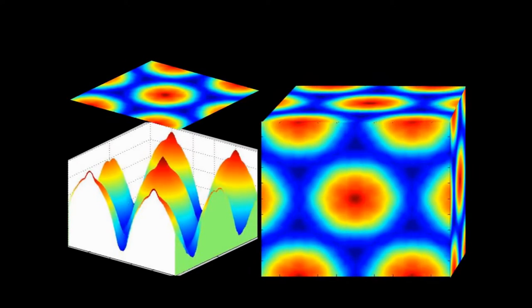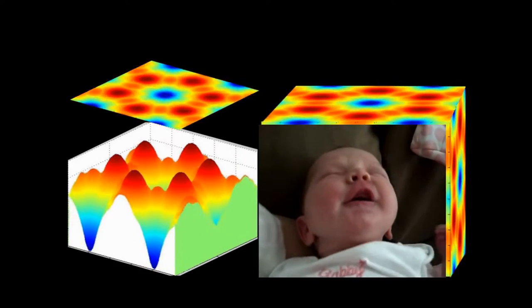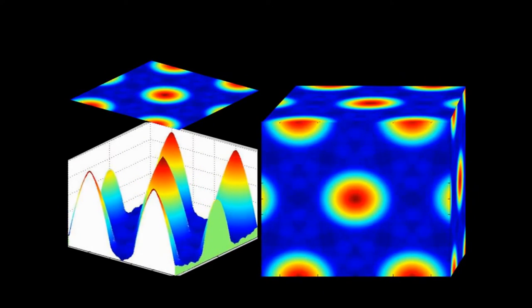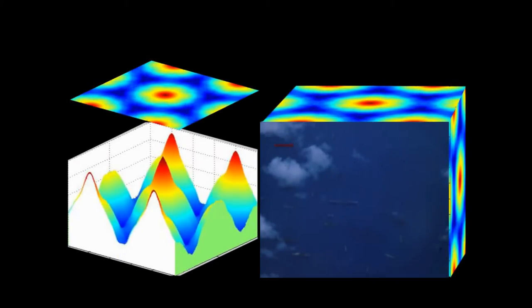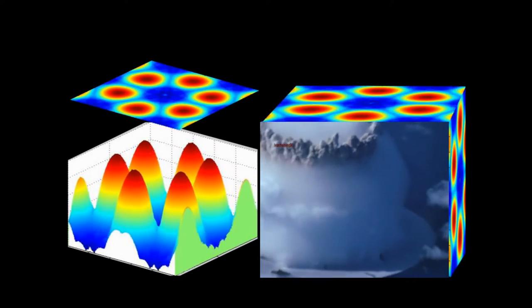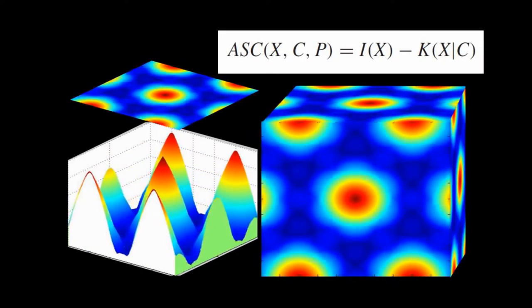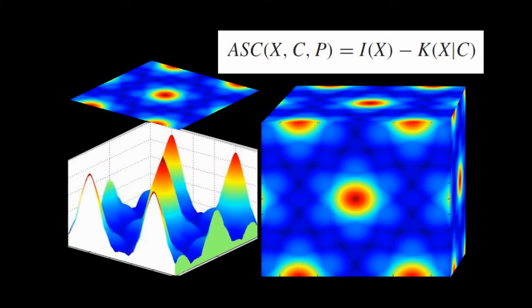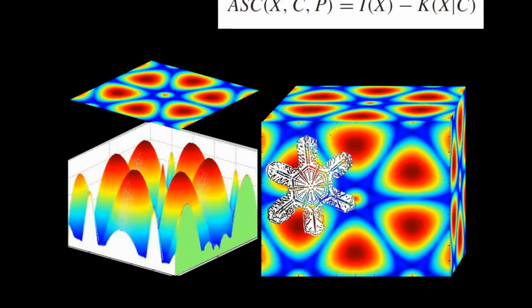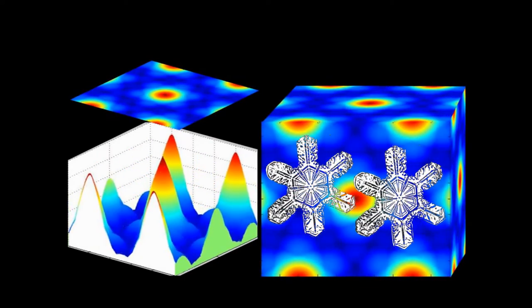Last time we talked about the idea of algorithmic specified complexity, how it combined the idea of Kolmogorov complexity based on context. And then it also folded in Shannon information theory. Could you give a quick explanation of algorithmic information theory? Kolmogorov complexity is the number of words, essentially, it would take to describe an object. So this is the minimum number of words it would take to describe the object.